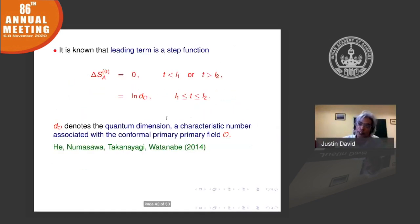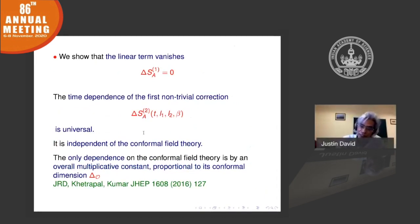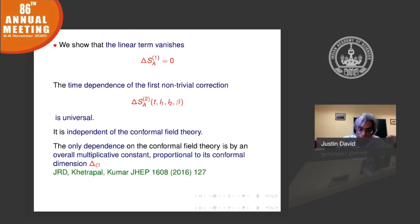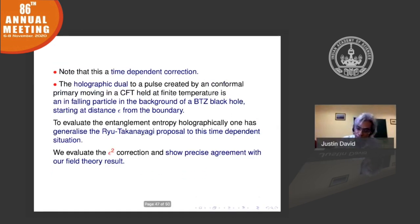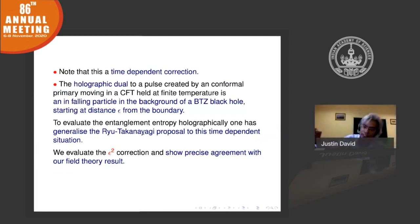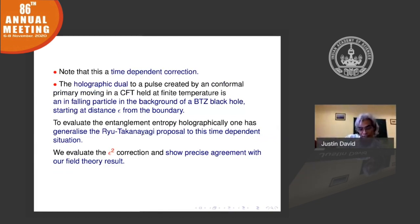Once you have this field theory result, you can see what it corresponds to in gravity. This pulse is dual to something like a falling particle in the background of a black hole — the black hole arising because of the finite temperature in the CFT. Evaluating the entanglement entropy requires generalizing the original geodesic formula to a time-dependent situation, and the ε² correction shows precise agreement with the field theory results.